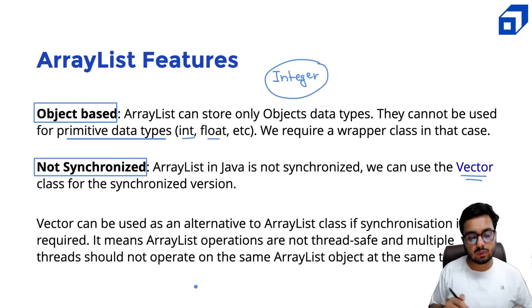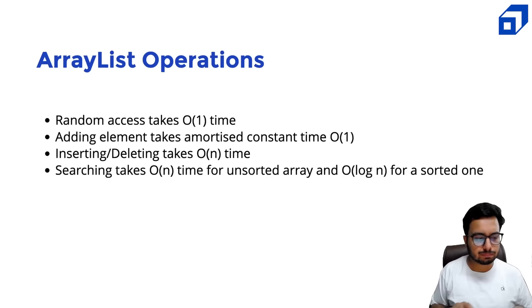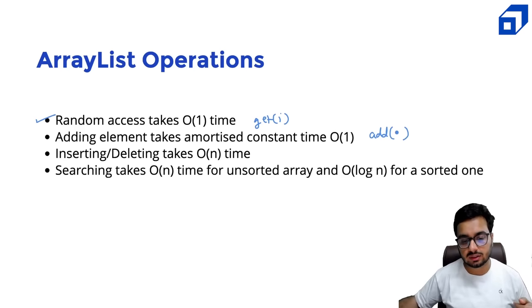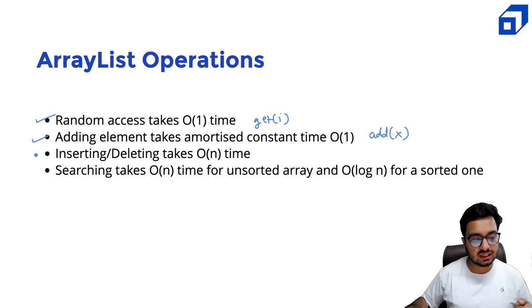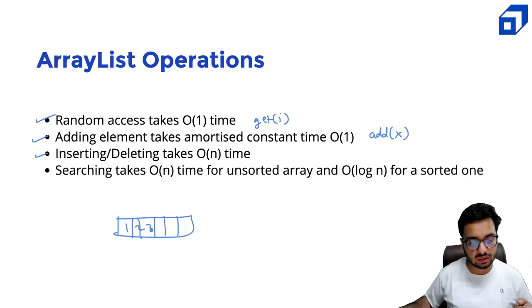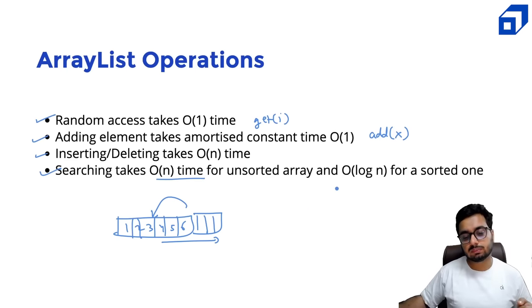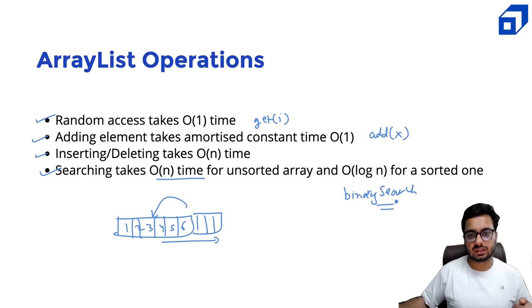What are the features of ArrayList? It is dynamic in size — it can grow and shrink. It is ordered — it preserves the order of elements. It is index-based — just like an array, it has indices. If you want to access the ith element, instead of array[i], you use arrayList.get(i), which also works in O(1) time. Indexing is zero-based. Searching takes O(n) time by default using the contains method with linear search. However, if the ArrayList is sorted, you can use binary search, which takes O(log n) time.